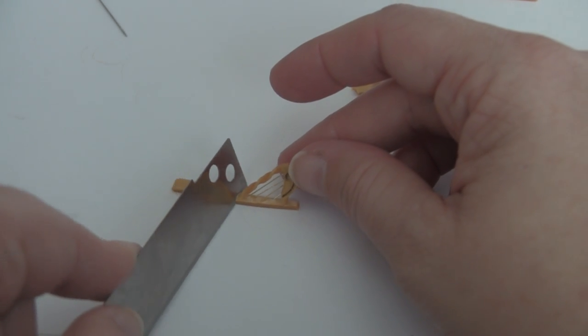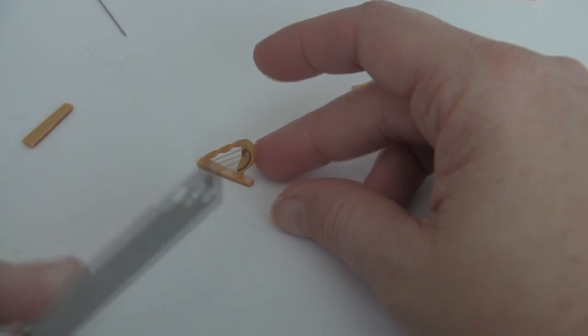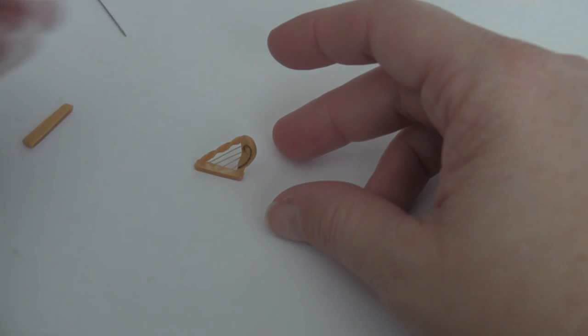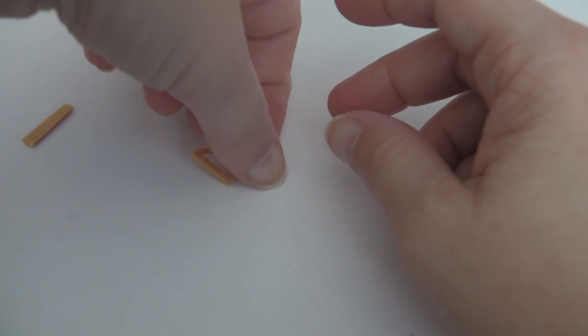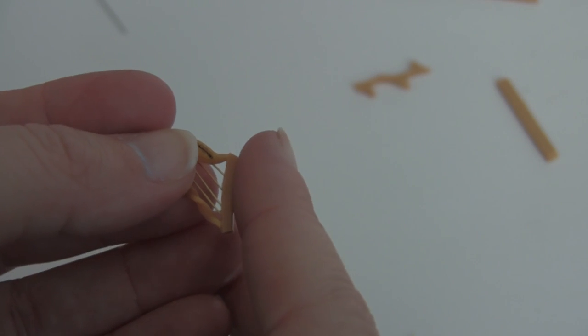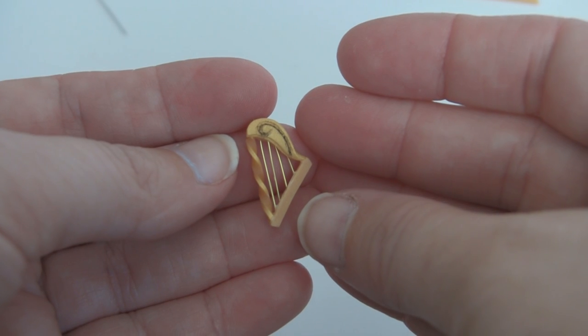Once that's done, I'll trim the bottom. And then I'll trim the top. There we go. There's the harp. We cook it one more time.